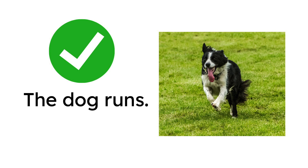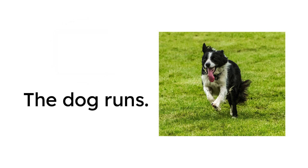Now, here's the tricky part. Tell me, why is it a good sentence? What are the rules, and how does this sentence follow the rules? The first rule is that a sentence must have one or more words. How many words do we have here? The dog runs — three words.